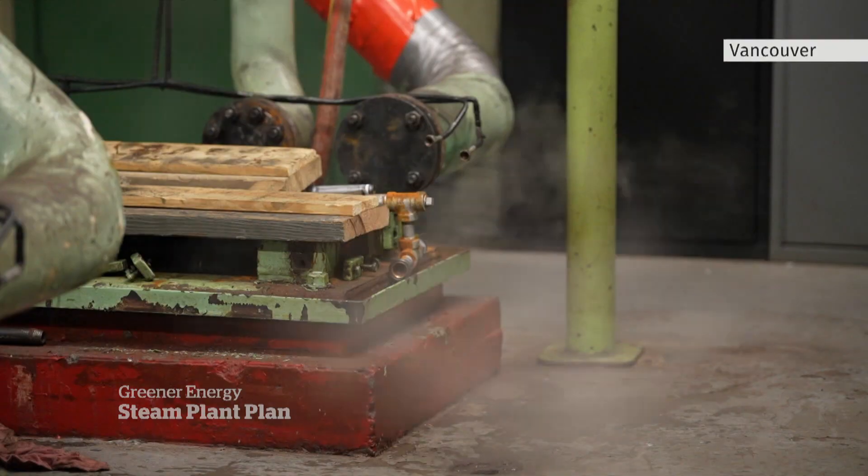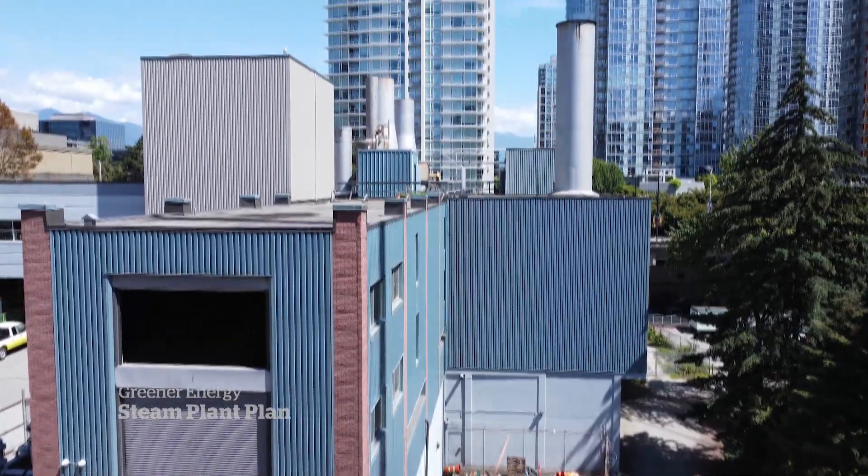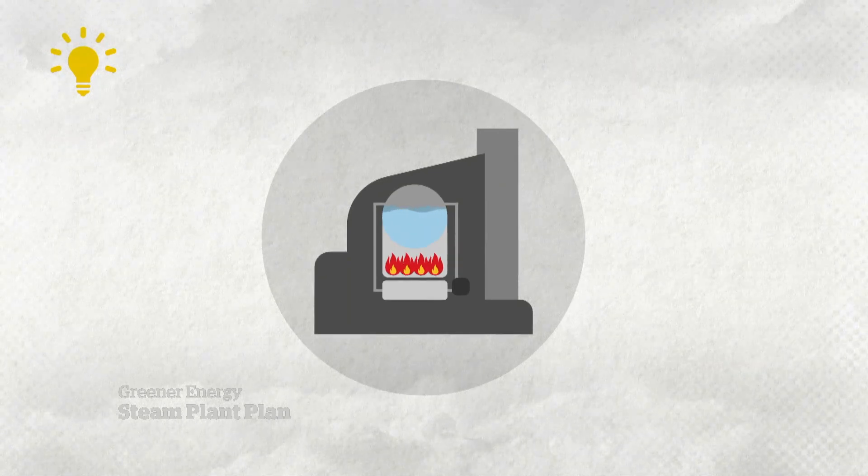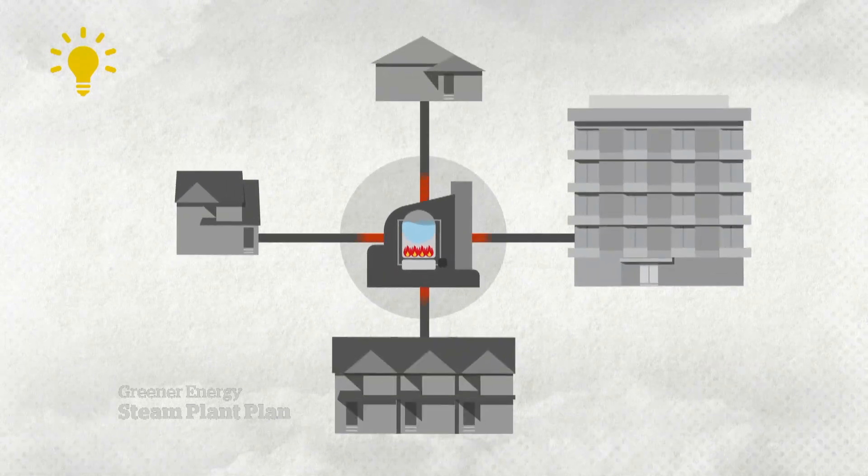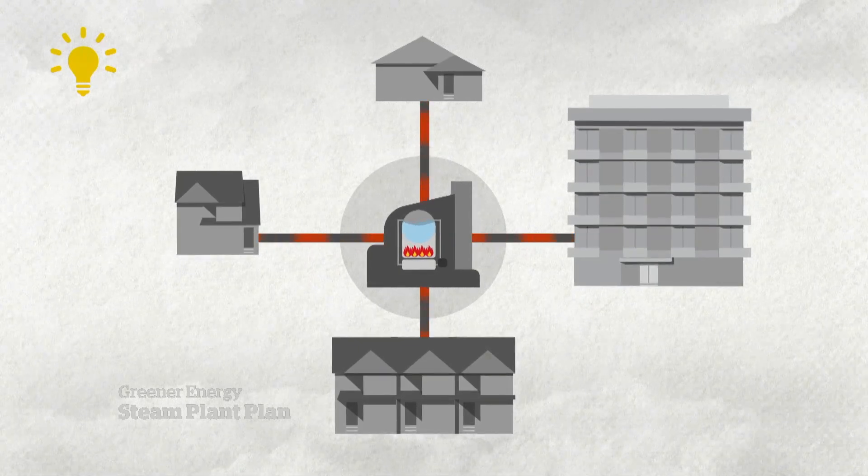The Creative Energy steam plant is one of North America's largest district energy systems. The idea is that cities have one big centralized boiler that then carries that heat through a network of pipes, efficiently heating buildings using less energy than if each building had their own boiler.